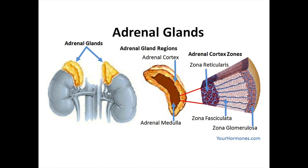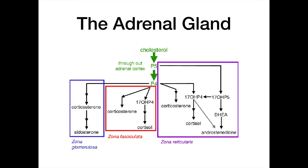The adrenal glands sit on top of the kidneys. The outer part is the adrenal cortex; the inner part is the adrenal medulla. The adrenal cortex is broken into zones: the zona reticularis (innermost), the zona fasciculata (middle), and the zona glomerulosa (outermost). Each zone secretes different hormones. All adrenal hormones start from a precursor molecule — cholesterol — which gets converted to pregnenolone, the starting point for all pathways.